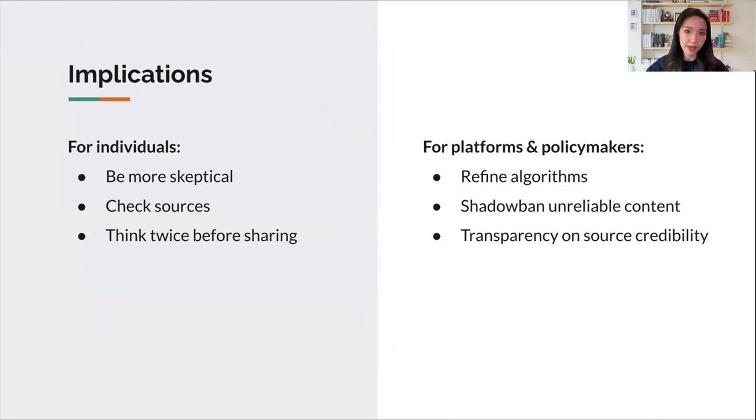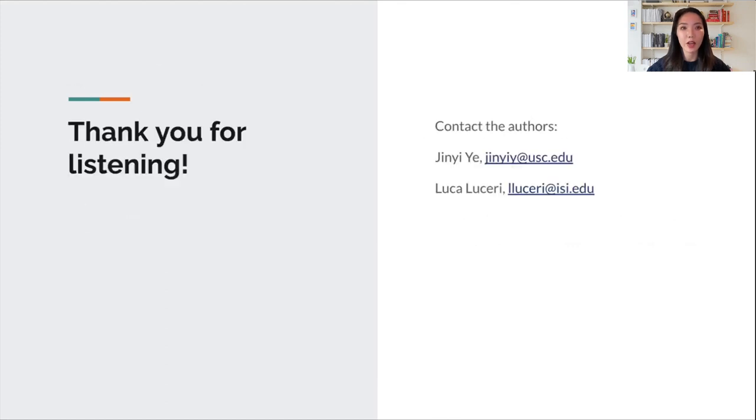For platforms and policymakers, the call is to refine algorithms, shadow ban unreliable content, highlight credible information, and enhance transparency around source credibility. Together, these steps can forge a digital realm where truth prevails, fostering a well-informed online community. Thank you very much.